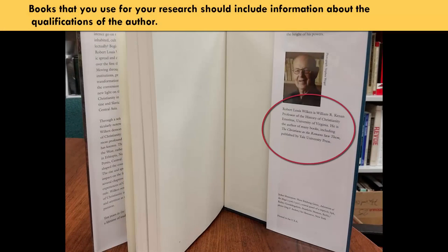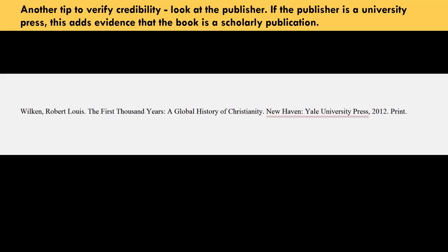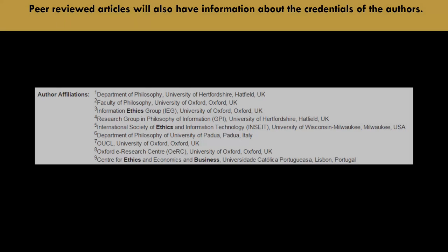Books that you use for your research should include information about the qualifications of the author. Another tip to verify credibility: look at the publisher. If the publisher is a university press, this adds evidence that the book is a scholarly publication. Peer-reviewed articles will also have information about the credentials of the authors.